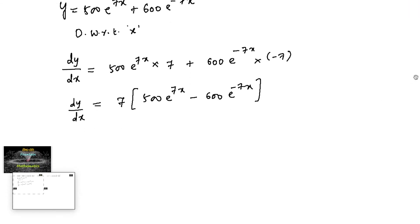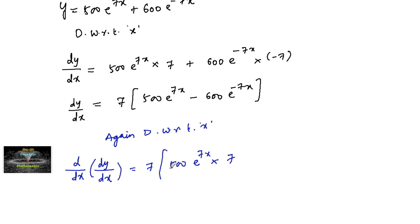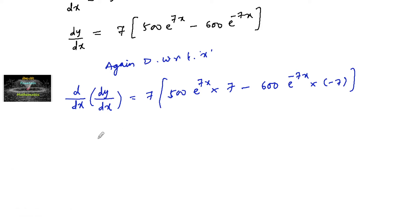Now let's differentiate again with respect to x. We have d/dx of dy/dx equal to 7 times of: differentiating 500e to the power of 7x gives 500e^(7x) times 7, and differentiating minus 600e to the power of minus 7x gives minus 600e^(minus 7x) times minus 7. So d²y/dx² equals 7 times that result.